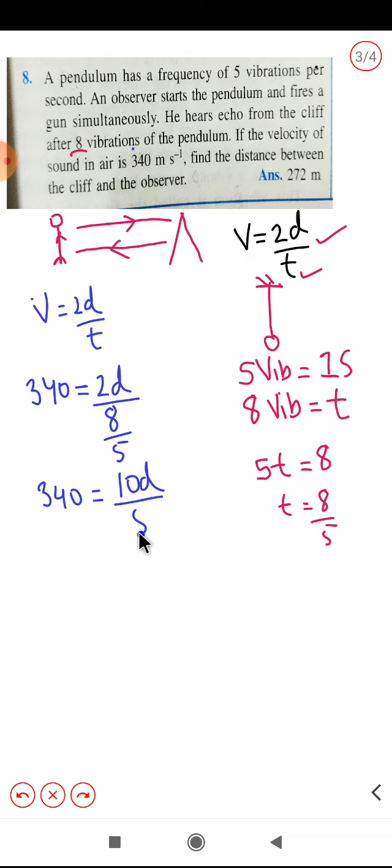Now ten will get cancelled on this side. I will get 340 equals 4d by 8. If you cross multiply these two numbers, that will be 340 into 8 divided by 4. This is going to be 272 meters.